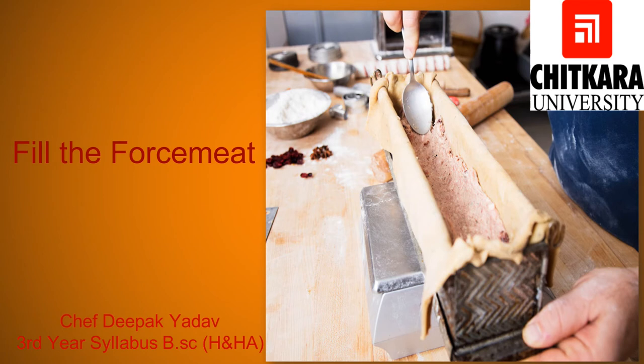The third step is filling the mold with force meat. Pate, like Terrine, is prepared by artfully layering or assembling force meat with patterns to create a good visual impact. The garnish style of force meat is used in combination with other kinds of force meat. Ensure that the force meat is not filled up to the brim — a space of at least a quarter of an inch should be left for the expansion of the meat. As you can see in this picture, ensure that the force meat is spread to every corner of the mold using a spatula or a spoon so that it is evenly spread.